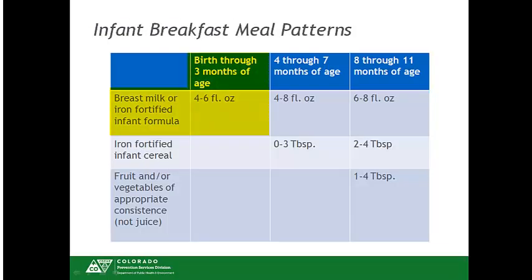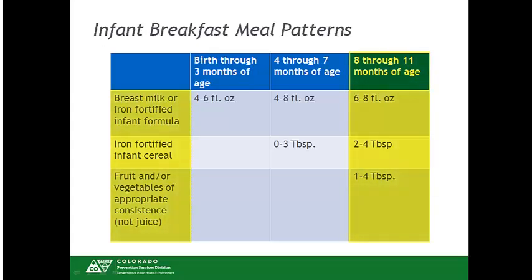For breakfast, the 0 through 3 month olds only require breast milk or formula. The 4 to 7 month olds require breast milk or formula, and if they are developmentally ready, infant cereal may be offered. Staff members should consult with parents as to when foods can be started. Lastly, 8 through 11 month olds require breast milk or formula, infant cereal, and a fruit and/or vegetable.